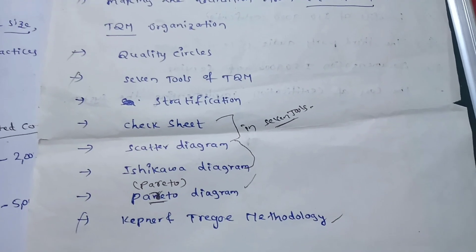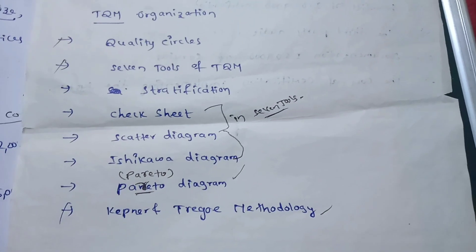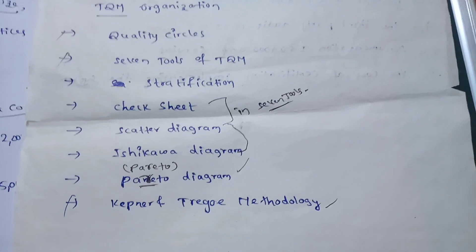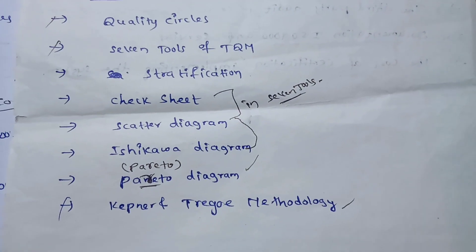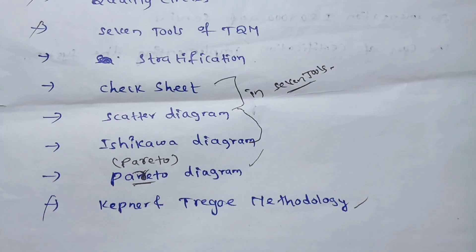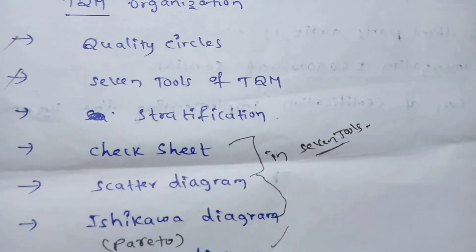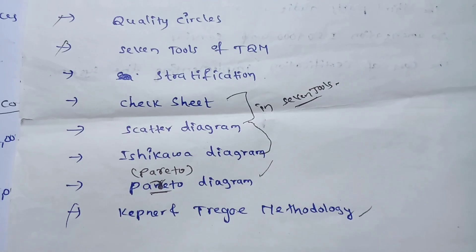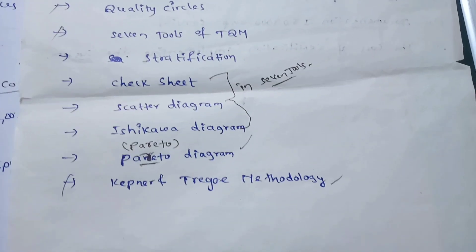In unit three, the seven tools of Total Quality Management are a very important topic. The seven tools include: check sheet, scatter diagram, Ishikawa diagram, and pilot diagram. These seven tools should all be covered. Quality certification is also important, along with technology and material topics.